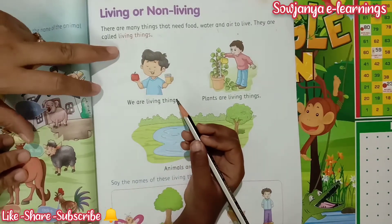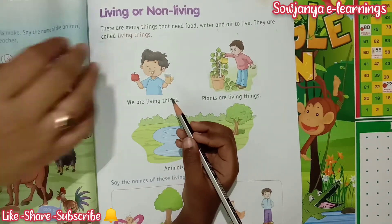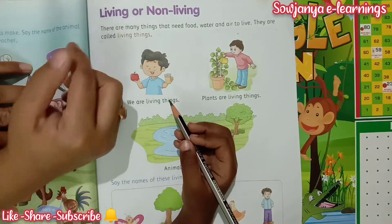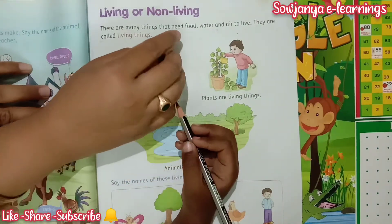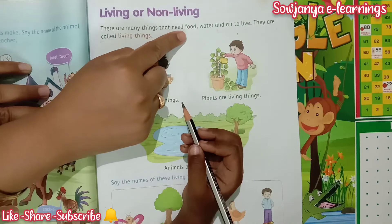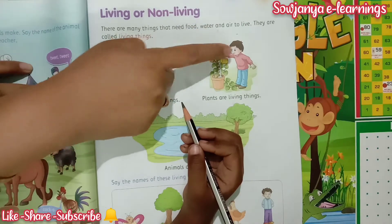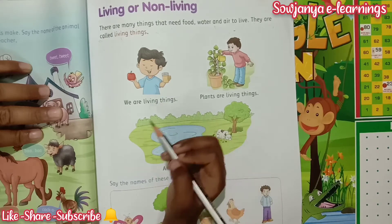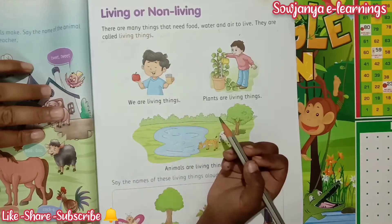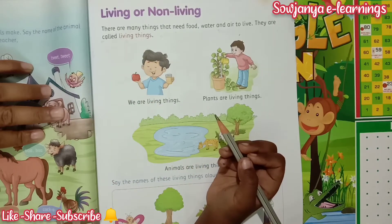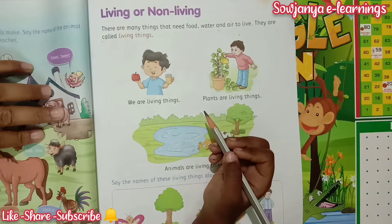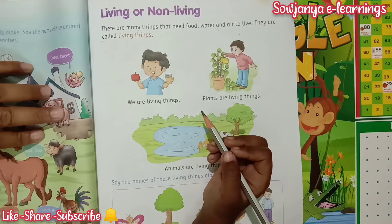Here first we learn about living things. Living things means which can have a life. If we want a life, what do we need? We need food. We need water and air. Food gives energy to us. Water keeps our body from getting dehydrated. And air — we need all these things to breathe. If these all things are not there, we can't live.